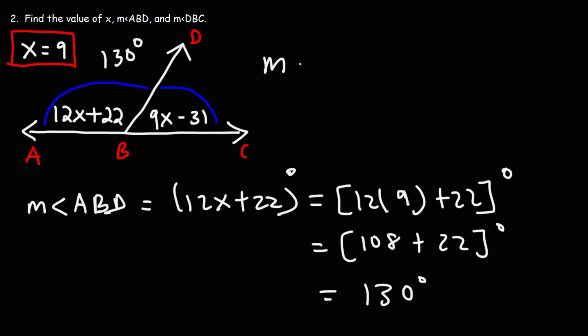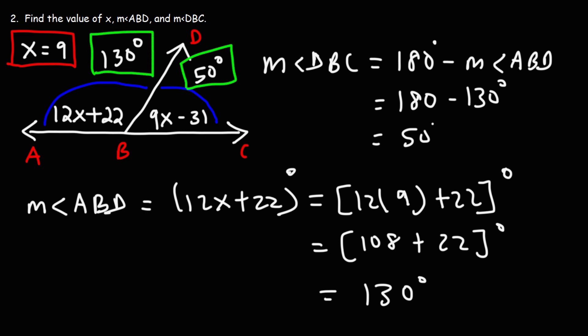So angle ABD has an angle measure of 130 degrees. To find the other angle, DBC, it's simply going to be 180 minus the other angle ABD. So it's 180 minus 130, which will give us 50. So that's what you can do to solve problems like this, problems associated with complementary angles and supplementary angles.